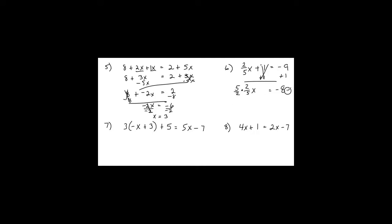I multiply by the reciprocal, flipping it to 5 halves, and multiply both sides by 5 halves. Put a 1 underneath to keep tops and bottoms straight. The 5's cancel and the 2's cancel — multiplying by reciprocals gives 1, so 1 times x is just x. On the other side, negative times positive gives a negative sign. You can either multiply 8 times 5 to get 40 over 2, or simplify first: divide 8 and 2 each by 2 to get 4 over 1. So negative 4 times 5 gives negative 20.